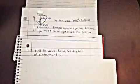Equation number 3 asks us to find the vertex, focus, and directrix of the equation x squared plus 6x minus 4y plus 1 equals 0.